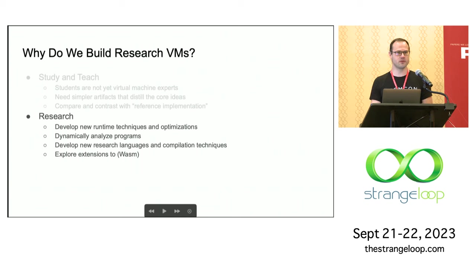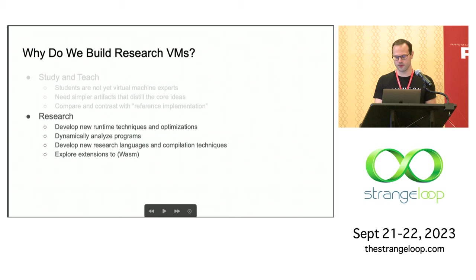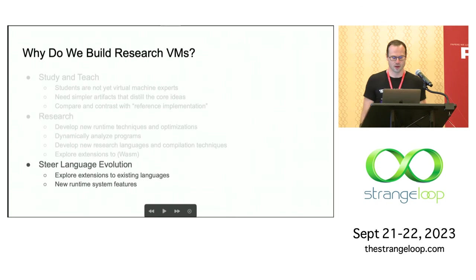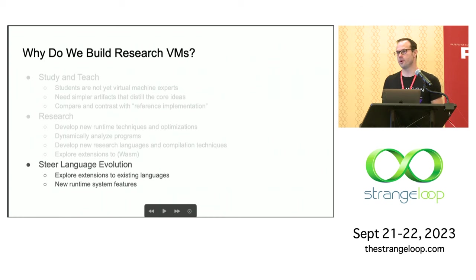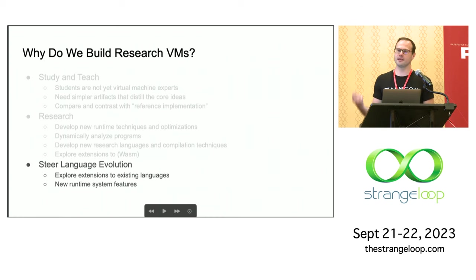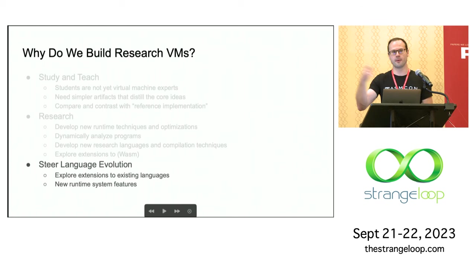And of course, WebAssembly is evolving too. If we add extensions, are we going to do that in production VMs or in research vehicles? A research engine can help steer language evolution — not only of WebAssembly, but also of languages. The easier it is to experiment with a feature, whether a WASM feature or a source-level feature, the easier it is to try out many different ideas and know which is good.